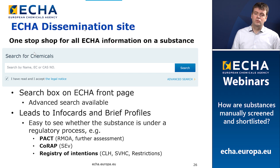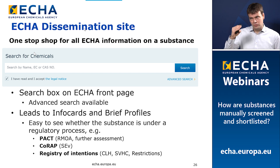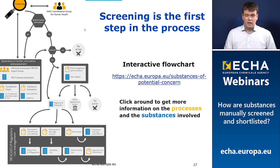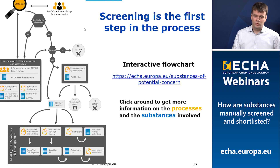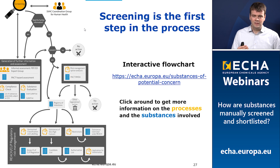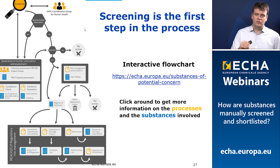The dissemination site is easy to access — there's a search box on the ECHA front page. You just put in your substance identifiers, press search, and you should be led to the info card of the substance and subsequently the brief profile. In the info card it's very easy to see if you scroll down whether the substance is currently under or has been under any regulatory action with ECHA. We also have an interactive version of the flowchart — the yellow parts you can click to get information on the process, and the blue parts to get information on the substances.